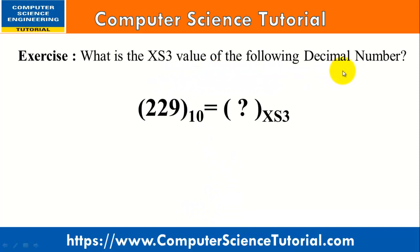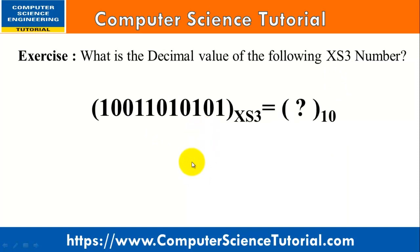Now I have a small exercise for you. What is the XS3 value of 229 base 10? Similarly, what is the decimal value of the XS3 number 10011010101? Solve these two exercises and write your answers in the comment section — I will confirm whether your answer is correct or not.